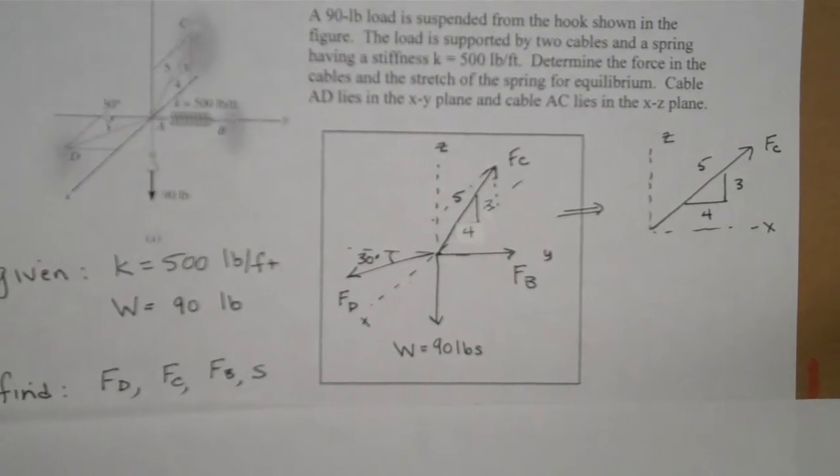Given: we're given what the spring stiffness is, K equals 500 pounds per foot. We're given what the weight is, 90 pounds. We're asked to find force D, force C, force B, and the stretch of the spring distance S.